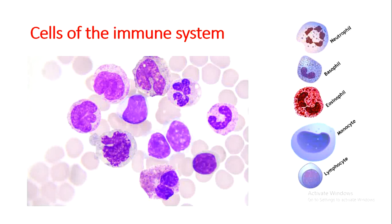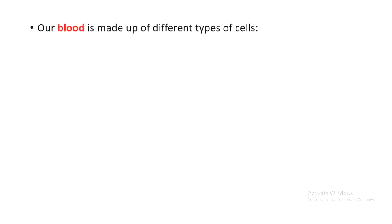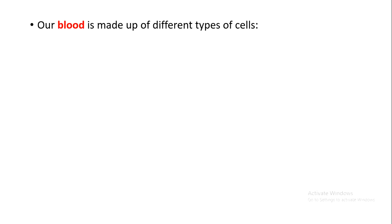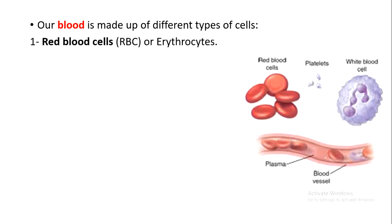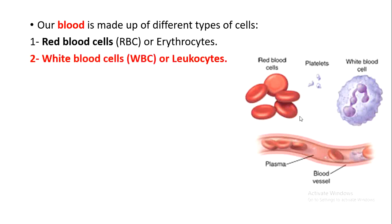As we know, our blood is made up of different types of cells. Blood is a tissue, and a tissue is a group of cells. The first type is red blood cells, also called erythrocytes. The second type is white blood cells, also called leukocytes. The third type is platelets, which are mainly fragments of cells.